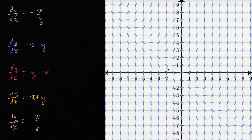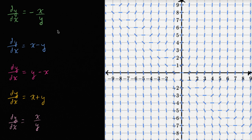I encourage you to pause the video right now and try it on your own. So let's work through each of them. The way I'm going to do it is I'll find some points that seem easy to do arithmetic with and see if the slope described by the differential equation at that point is consistent with the slope depicted in the slope field. For simplicity, I'll use x equals one, y equals one for all of these.